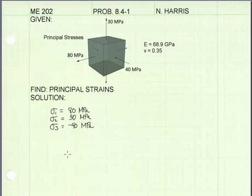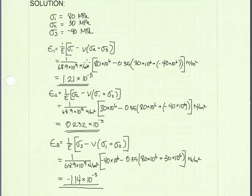Instead of solving for epsilon x, y, and z, we'll solve for epsilon 1, epsilon 2, and epsilon 3. Now applying generalized Hooke's Law for epsilon 1, epsilon 2, and epsilon 3 is shown.